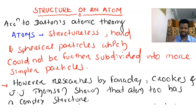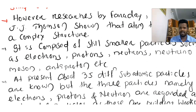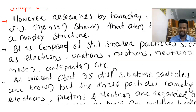The constant particles in an atom are many subdivided particles, which is described in modern atomic theory. Scientists like J.J. Thomson, Faraday and others showed that the atom is a complex structure — not a simple structure. Many subatomic particles are present in an atom. Those subatomic particles are called electron, proton, neutron, meson, antiproton, etc. At present, about 35 different subatomic particles are known within the atom.